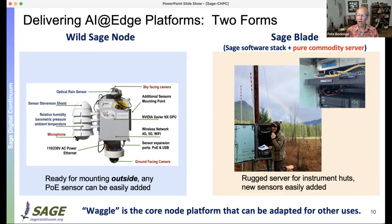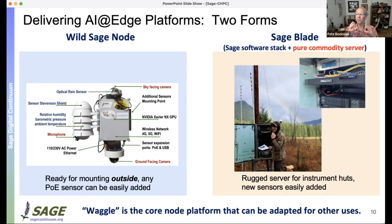There are two hardware approaches. One is a rack-mounted server placed in an instrument hut — in this case going into a hut in Colorado, where a GPU blade processes data. Other times the hardware needs to sit outside: that's this node, which has a small GPU from the NVIDIA Jetson series, plus a power supply and power-over-ethernet. This relatively small unit — something a person can carry — can be put outside to process data directly.